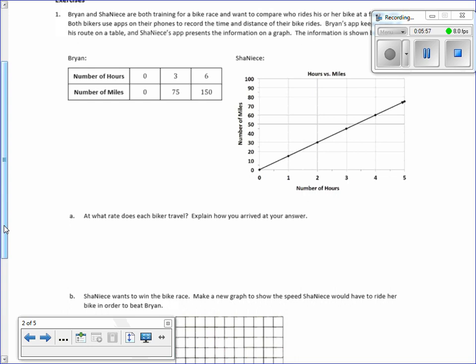Well, if you want to find the rate, that's our K. And this is X, and this is Y, and K equals Y divided by X. So I can't use the zeros, so let's go to the next one. Number of miles Y is 75 divided by 3 equals 25. If I take 150 divided by 6, I still get 25. And that is miles per hour. 25 miles per hour on a bike is crazy fast.